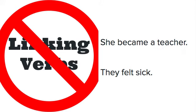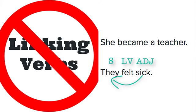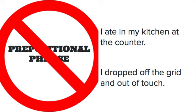Let's look at another example. They felt sick. They is our subject, felt is our linking verb, and sick is an adjective describing they. So sick in this case is being linked to they using the linking verb felt.